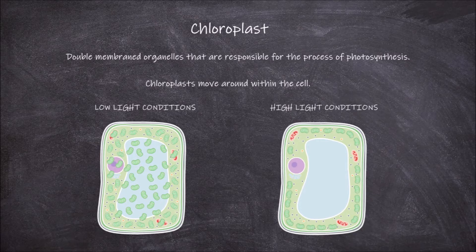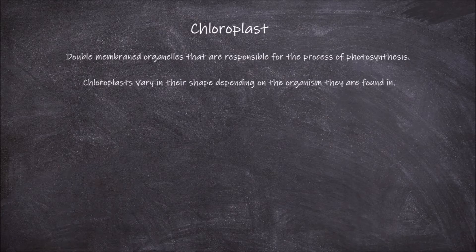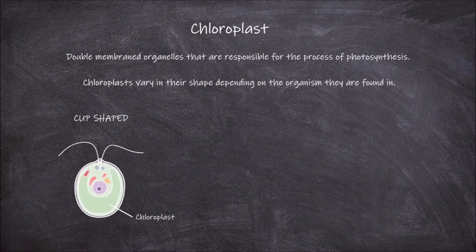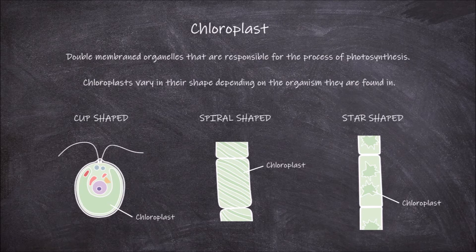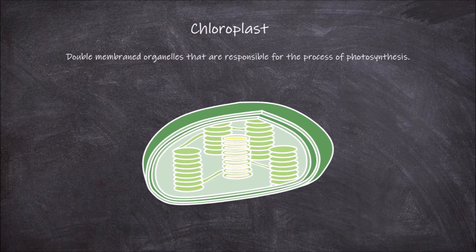Chloroplasts vary in their shape depending on the organism they are found in. Some examples include the cup-shaped chloroplasts found in Chlamydomonas, the ribbon or spiral-shaped chloroplasts found in Spirogyra, and the star-like-shaped chloroplasts found in Zygnema. They can also be oval or lens-shaped, which is the shape found in most higher plants.